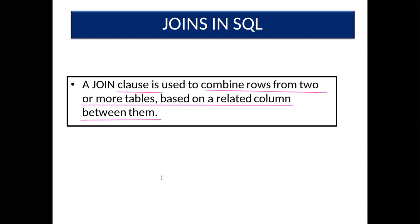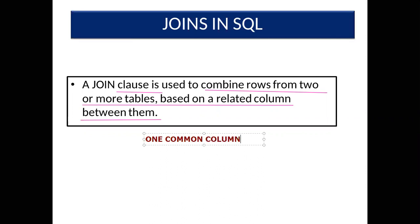For joining, one condition is compulsory: there must be one common column. If we do not have one common column, then we cannot join the tables. The second thing is integrity — this type of integrity involves the foreign key.